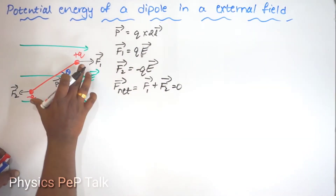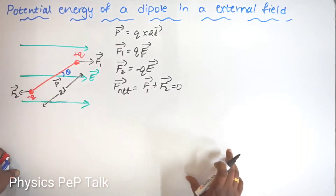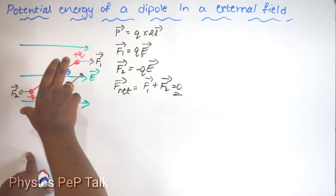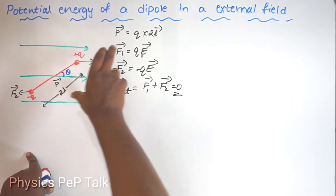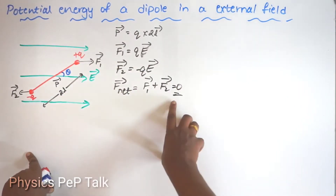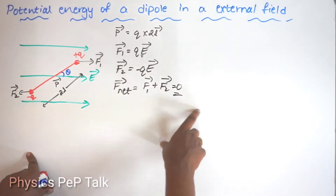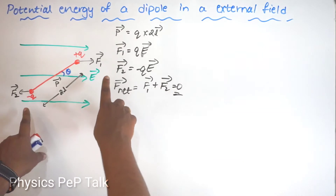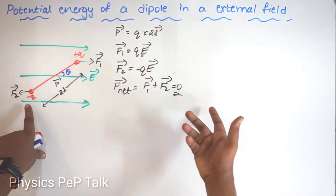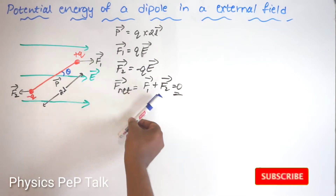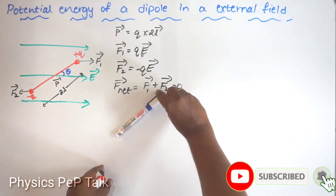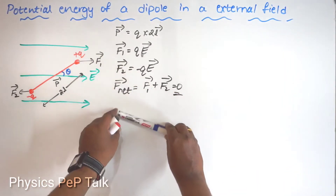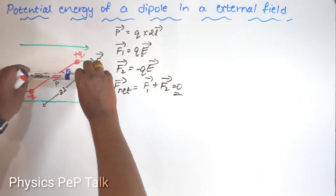So the net force acting on the system is 0. This means the dipole in an external electric field will not have a linear motion in the direction of the electric field. There are two forces of the same magnitude but opposite direction, which makes the dipole rotate in the clockwise direction.